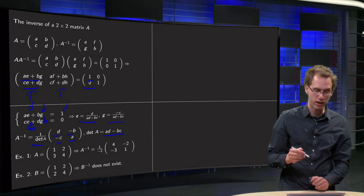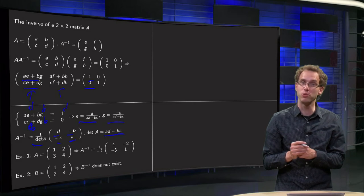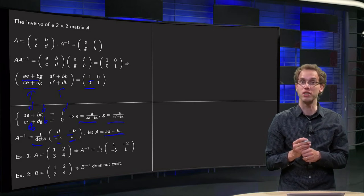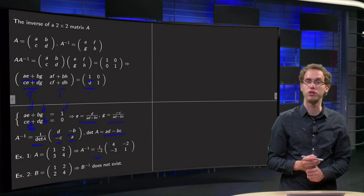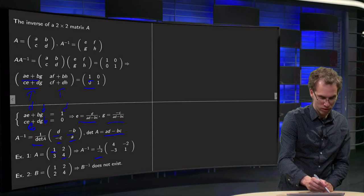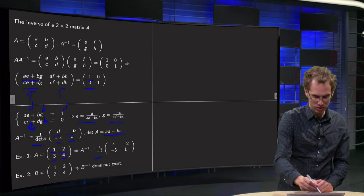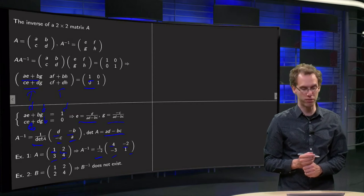A equals [[1, 2], [3, 4]], then A inverse. First compute the determinant. 1 times 4 minus 2 times 3. 4 minus 6 equals minus 2, so non-zero. So, A inverse equals 1 over minus 2. And then you interchange the 1 and the 4 and put minuses over here. So, you get [[4, -2], [-3, 1]]. And there you have your A inverse.